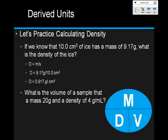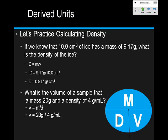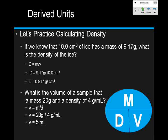Now let's look at our second question: what is the volume of a sample that has a mass of 20 grams and a density of 4 grams per milliliter? If we're finding volume, cover up the volume in the circle — that tells us to do mass divided by density. So V equals 20 grams divided by 4 grams per milliliter, which gives us 5 milliliters. You can memorize that volume is milliliters or centimeters cubed, density is grams per centimeters cubed or grams per milliliter, and mass is always grams.